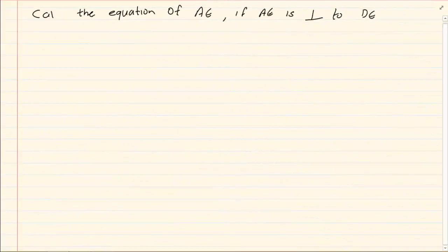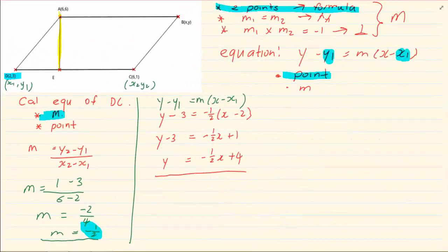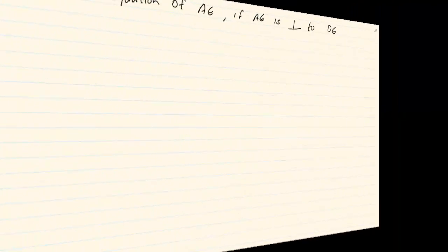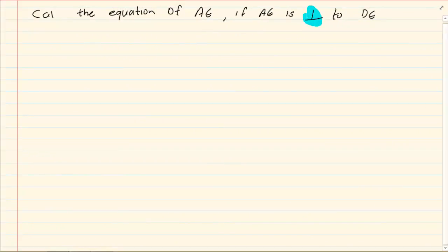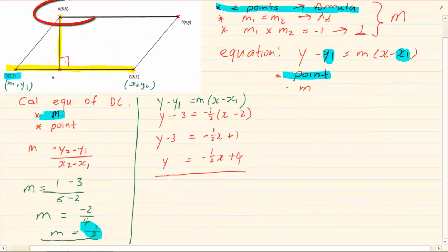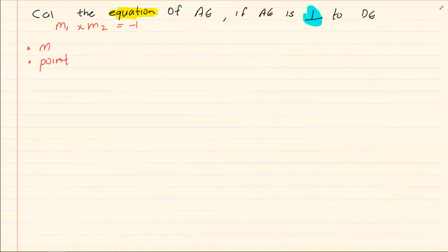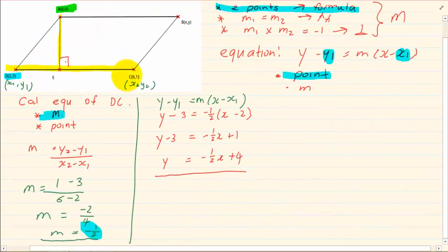The next question says: calculate the equation of AE if AE is perpendicular to DC. If it is perpendicular, the gradients when multiplied give negative 1. We want an equation, which means we need m and a point. If you look at the drawing, you can see a point touching line AE: coordinates 6 and 6. So we already have a point. To get the gradient, we know the gradient of DC is minus a half, calculated earlier.